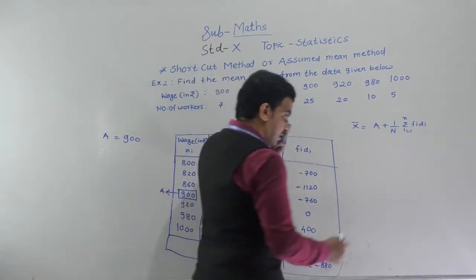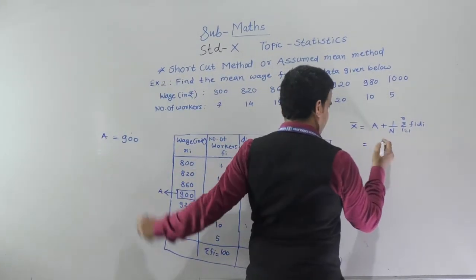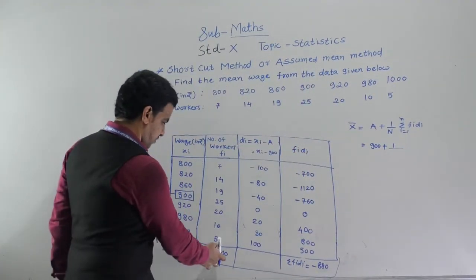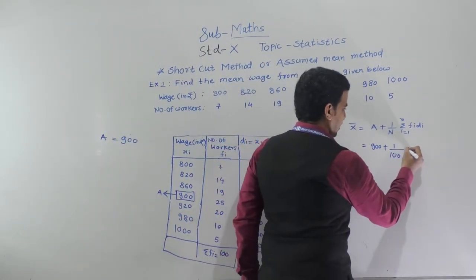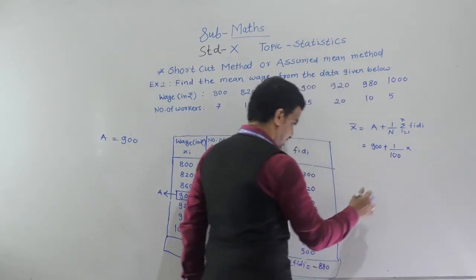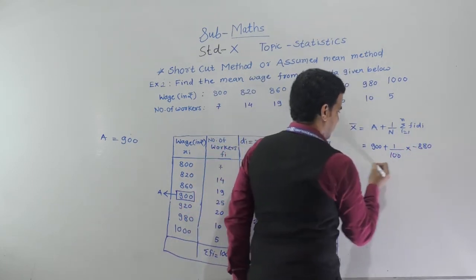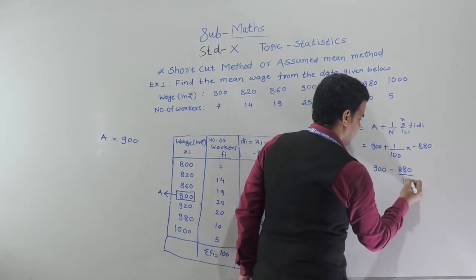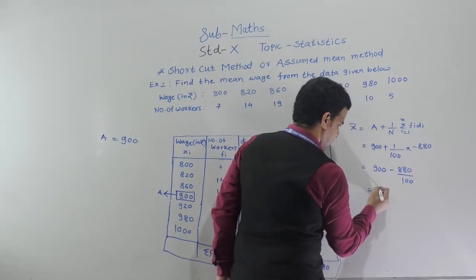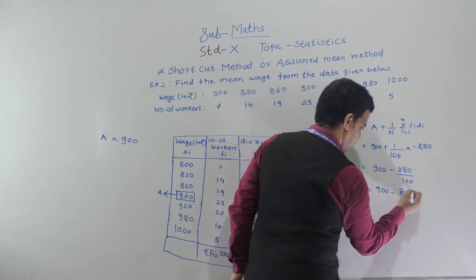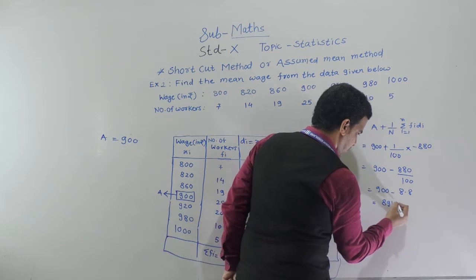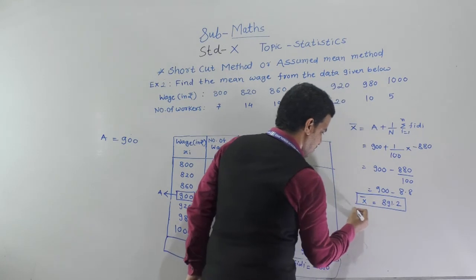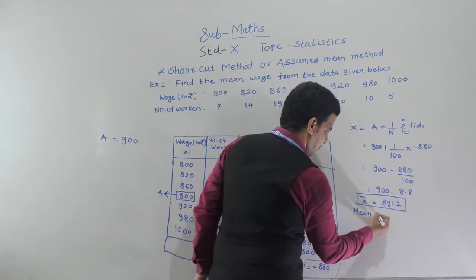Now we put all these values into the formula. x̄ = A + (1/n)·Σfi·di = 900 + (1/100) × (minus 880) = 900 minus 8.8 = 891.2. So x̄, the mean wage, is 891.2 rupees.